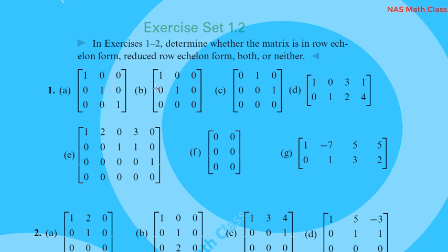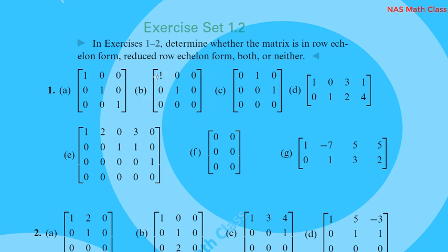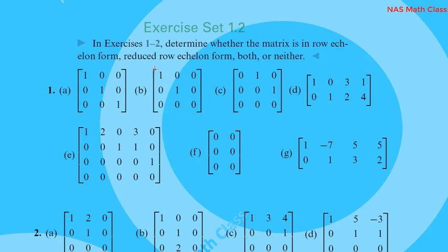The non-zero row comes before the zero row. So the non-zero row comes first, with a leading one. The leading one is a leading one — it is above a row of zeros. So this reduces to row echelon form.